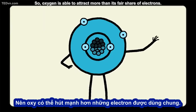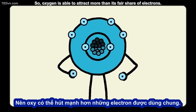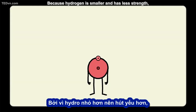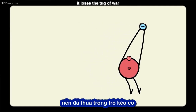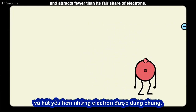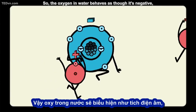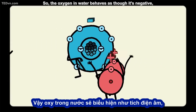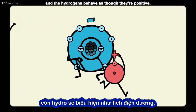So oxygen is able to attract more than its fair share of electrons. Because hydrogen is smaller and has less strength, or fewer protons, it loses the tug of war and attracts fewer than its fair share of electrons. So the oxygen in water behaves as though it's negative, and the hydrogens behave as though they're positive.